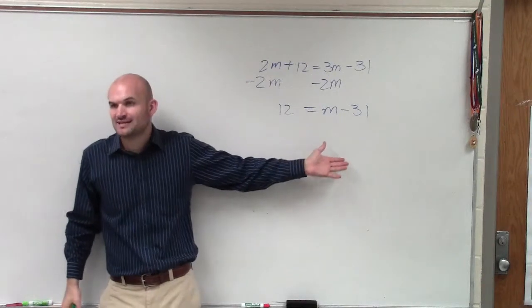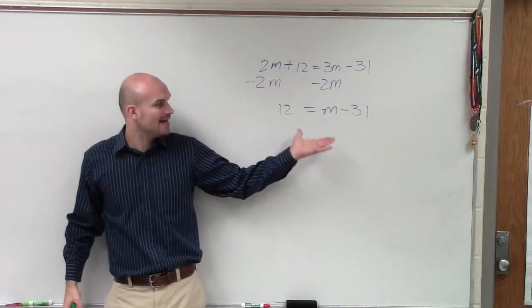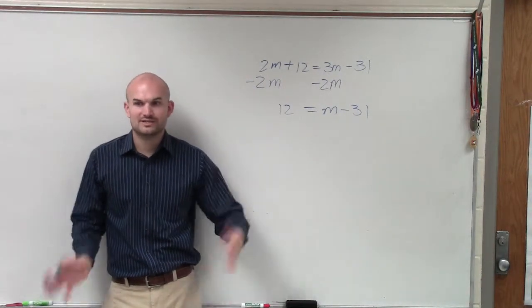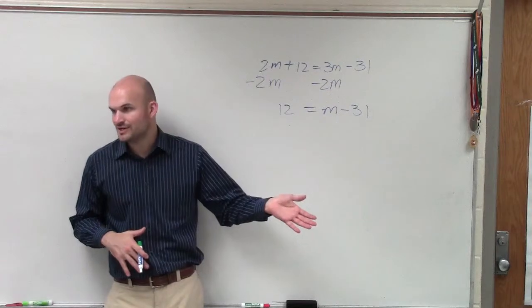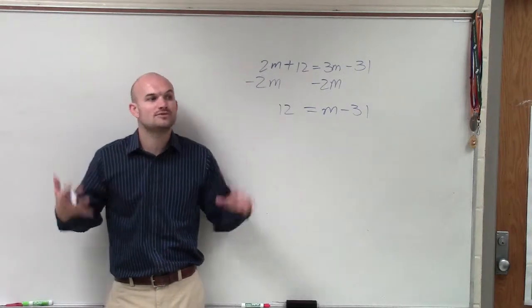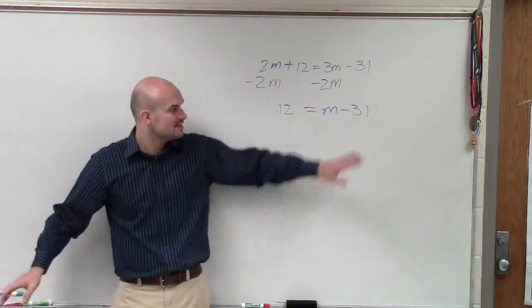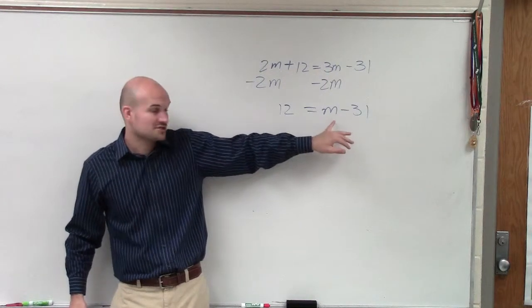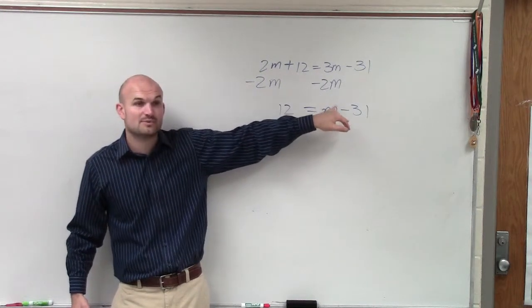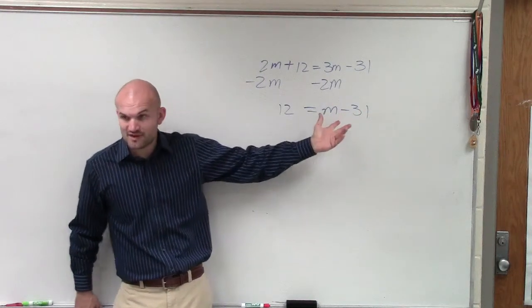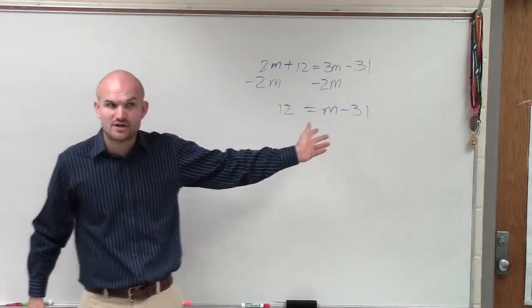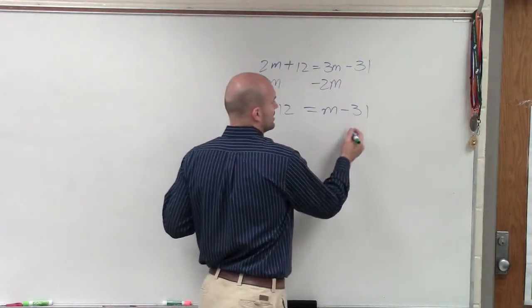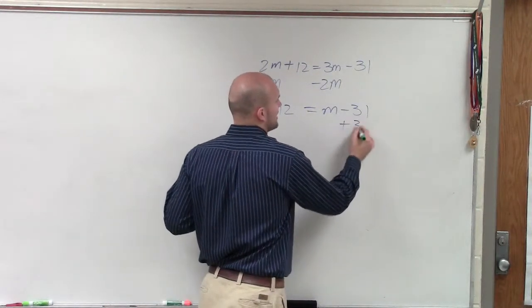By putting my variables on the same side, now I have a two-step equation. And we just did two-step equations, right? So you guys should understand — actually, this is only a one-step equation, because the only thing that's happening to my variable is it being subtracted by 31. So I just need to add 31.